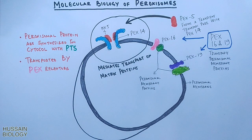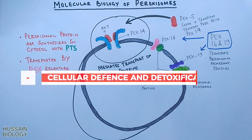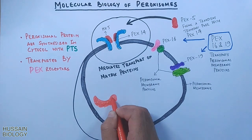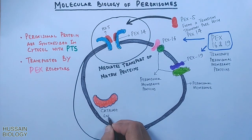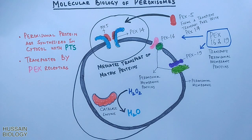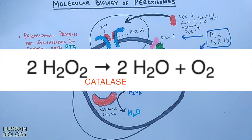Another important property of peroxisomes is the breakdown of toxic compounds. Peroxisomes are loaded with different enzymes. First, we have the catalase enzyme, which has the capability to decompose hydrogen peroxide into water and oxygen. Hydrogen peroxide is a harmful byproduct of many normal metabolic processes, so to prevent damage to cells and tissues it must be converted into less harmful substances. This is done by catalase, as shown in this reaction: hydrogen peroxide in the presence of catalase gets converted into water and oxygen.